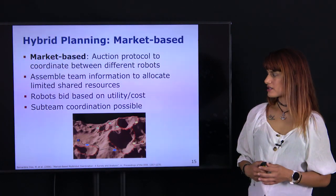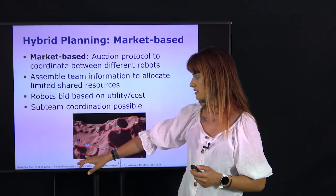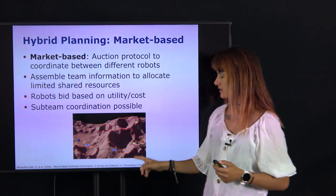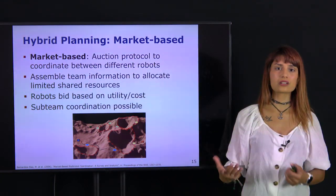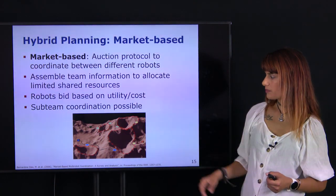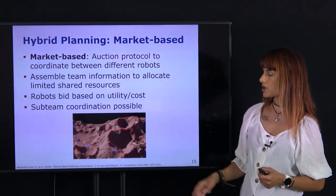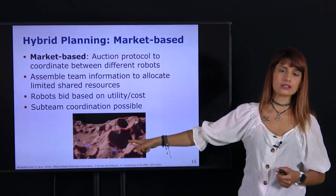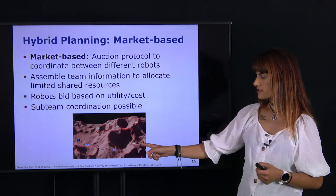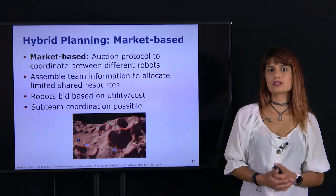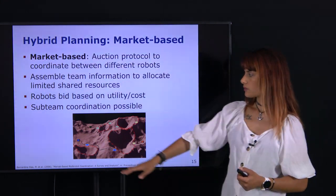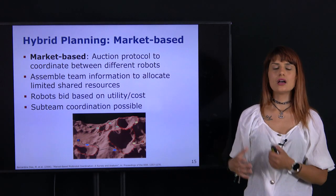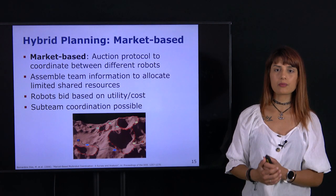In a market-based strategy for space exploration, three robots in different colors have circles representing sites to inspect. Each robot says: this is the potential value I could get if I went to inspect that point, and this is the cost — for example how long it will take me to get there. We look at these parameters for each of the three robots and decide which one gets the inspection site they placed a bid for.